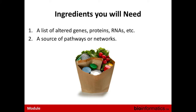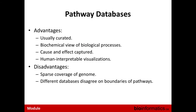When you do pathway or network analysis, you need two ingredients. First, a list of genes, proteins, RNAs, and other macromolecules that are altered in your system — we're typically looking at perturbations, either lab-created or naturally occurring due to disease. Second, you need a source of pathways or networks to perform the analysis against — your reference set.